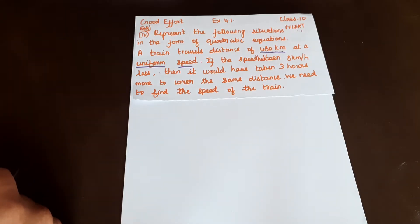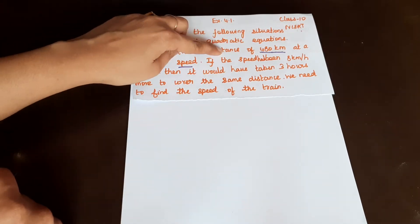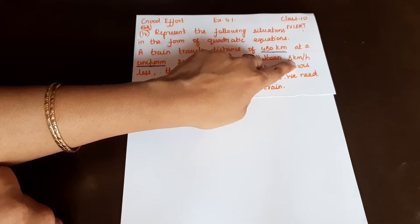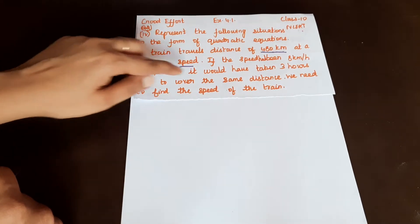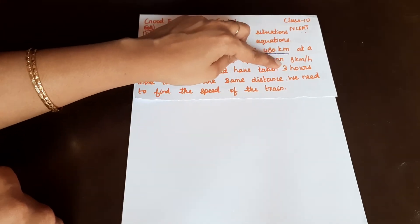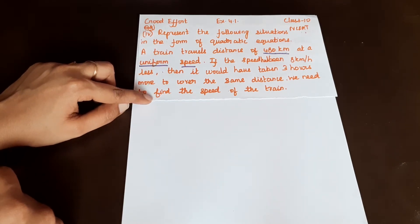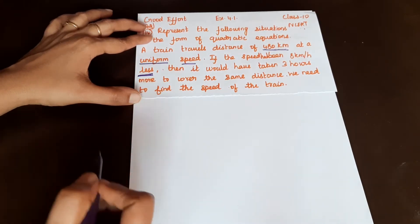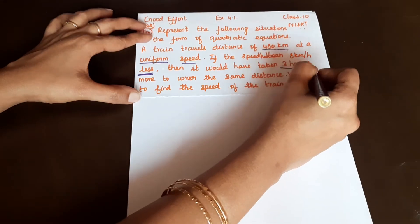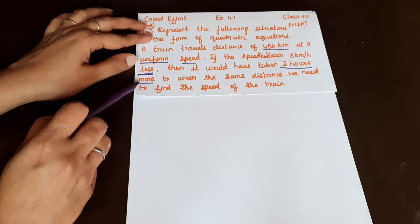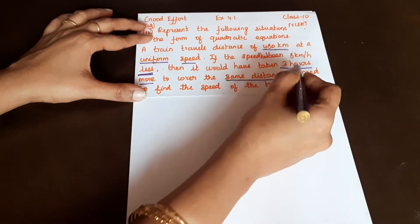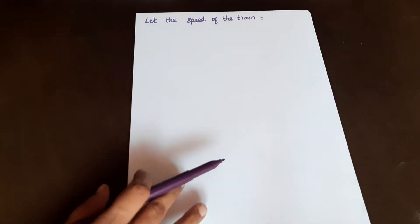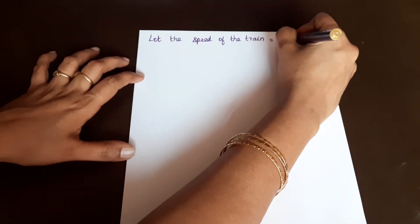The train travels 480 km at uniform speed. If the speed is 8 km per hour less, it would take 3 hours more to cover the same distance. We need to find the speed of the train. So let the speed of the train be equal to x km per hour.